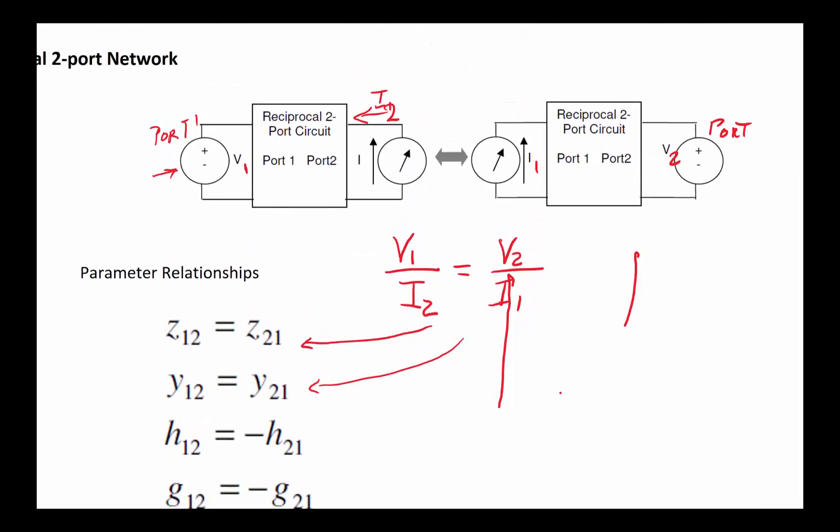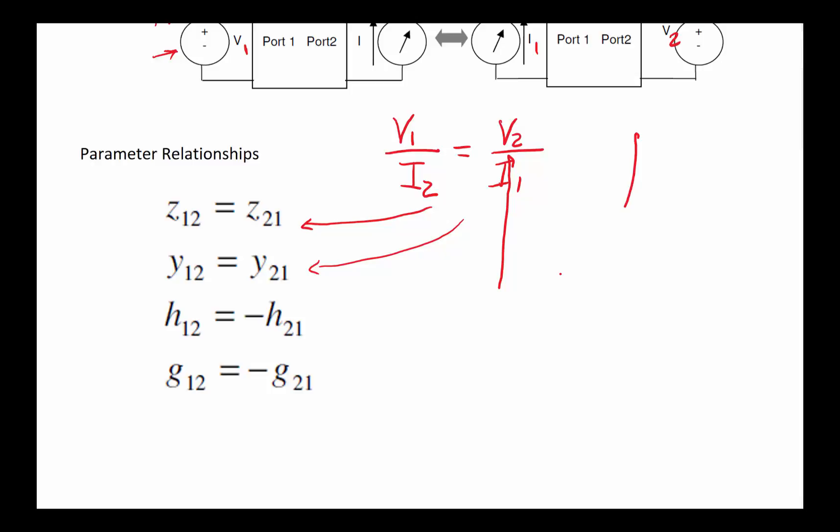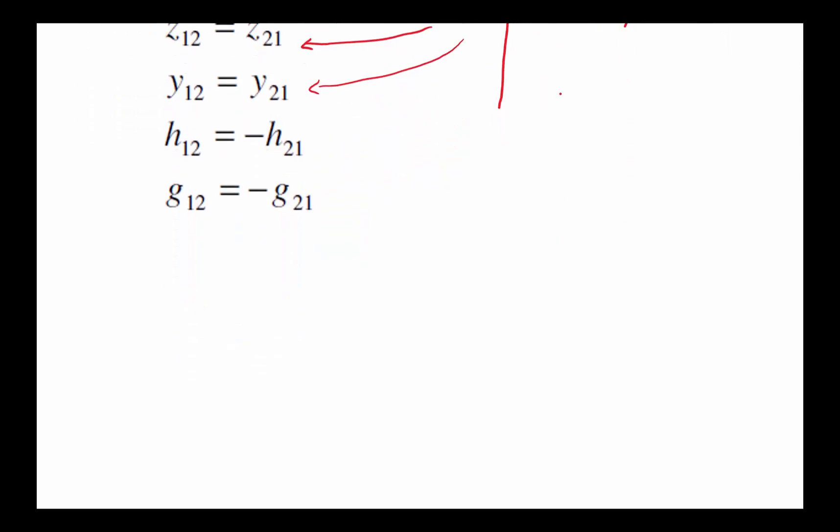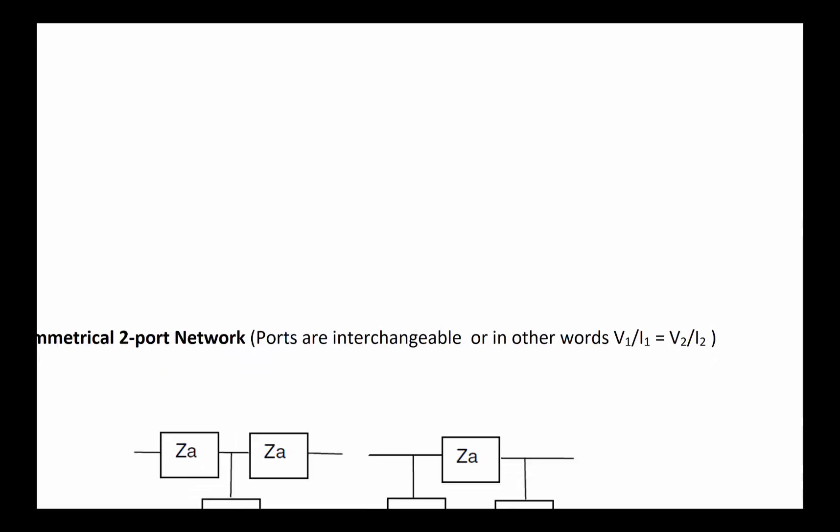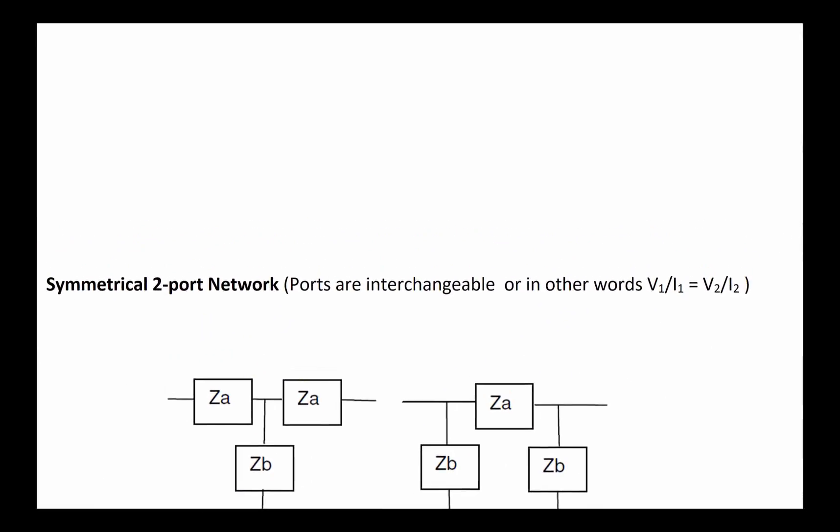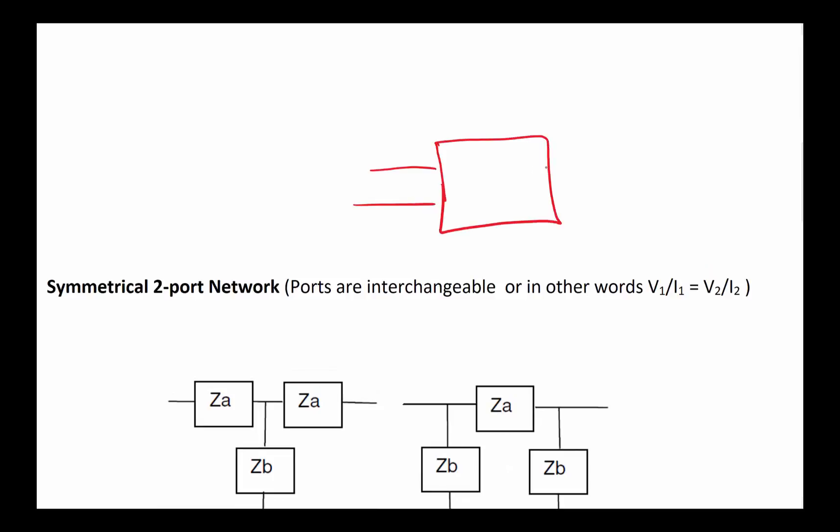This translates to us having the following handful of relationships for the parameters. There is even a more symmetric configuration called a symmetric two-port network. The definition is that if I have a two-port network with port 1 and V1 and port 2, I can literally interchange the ports and get the same exact result.